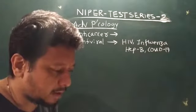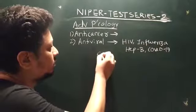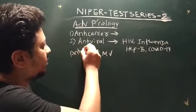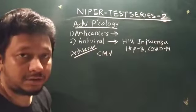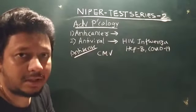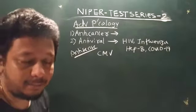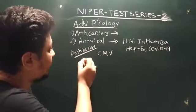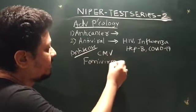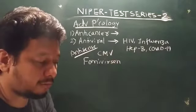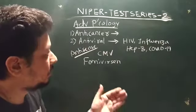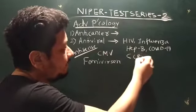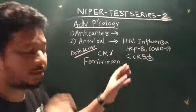For example, an antiviral agent used to treat cytomegalovirus infection via anti-sense therapy is one such advanced drug. NIPER sometimes asks about advanced or recently FDA-approved drugs. Classifications like CCR5 inhibitors related to antiviral and anti-cancer drugs have been discussed in the global classes.